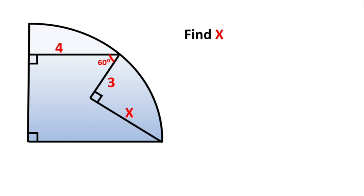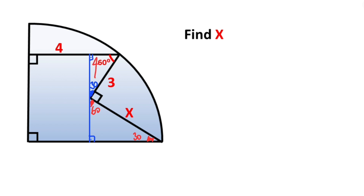First of all, if you draw a perpendicular like this, these angles are 90 degrees, here is 30 degrees, and then this angle must be equal to 60 degrees, with 30 degrees left here. If there's a three units opposite the 90 degrees, opposite the 30 degrees must be equal to 3 over 2, and then 5 over 2 is left here.